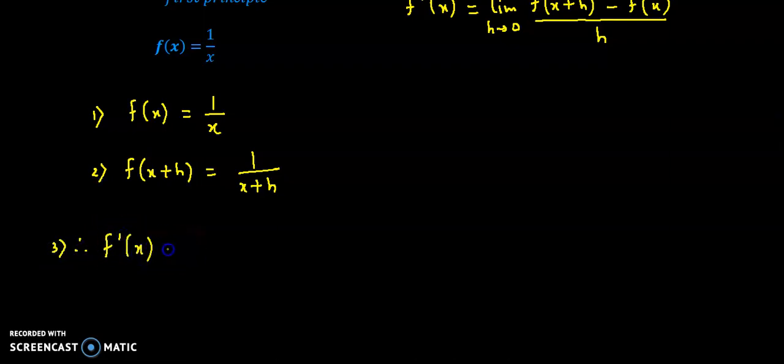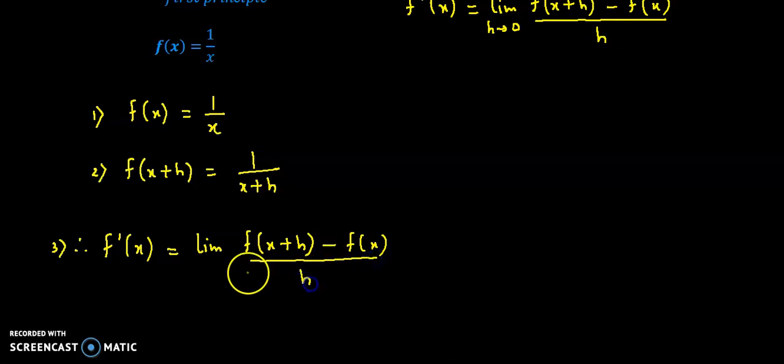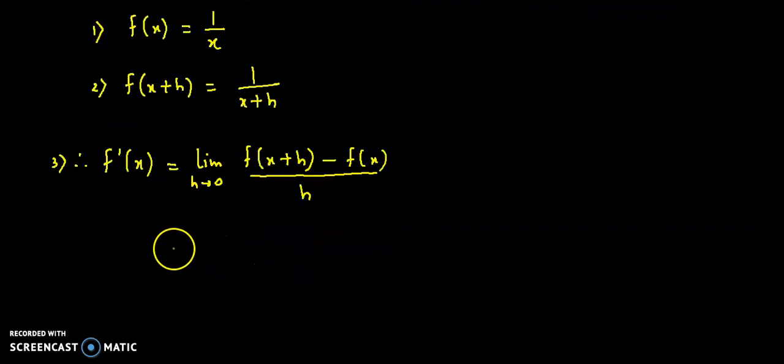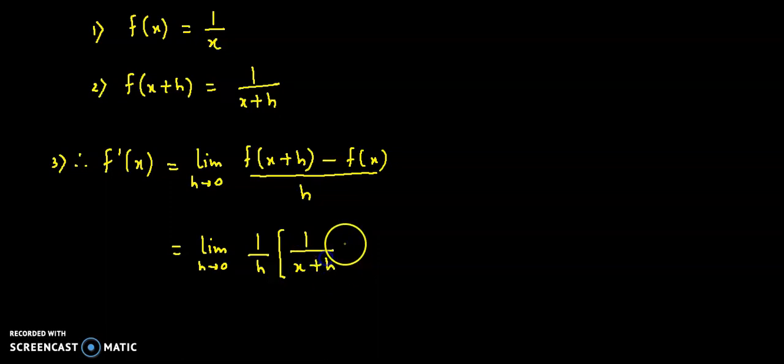Therefore f dash x is equal to limit of f of x plus h minus f of x upon h as h approaches 0. Now substituting the two functions, we get limit as h approaches 0, 1 by h ko hum side rakh dete hain, into f of x plus h is 1 upon x plus h minus 1 upon x.